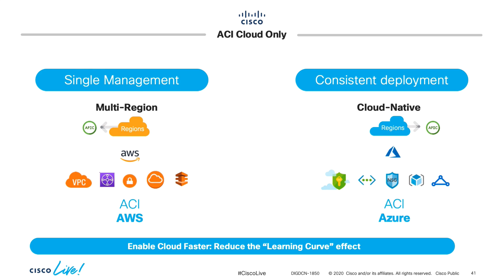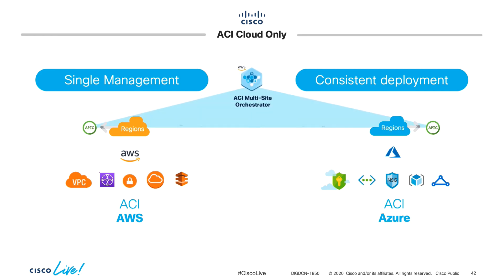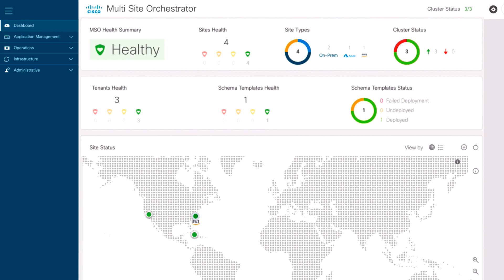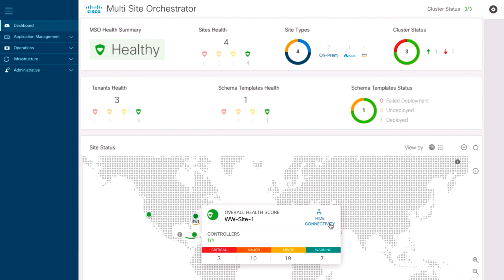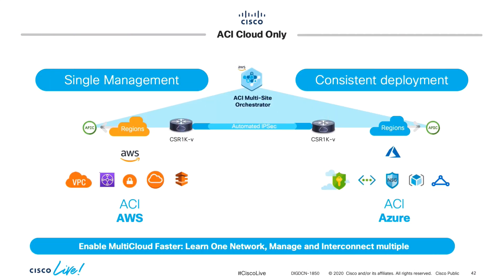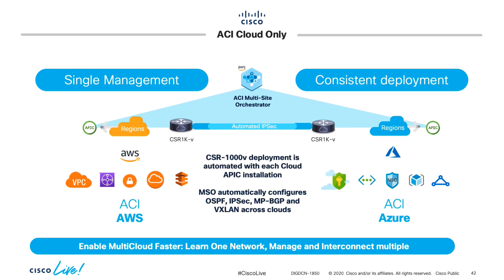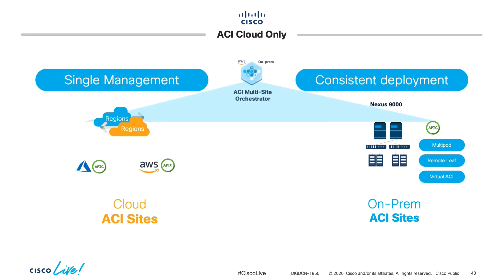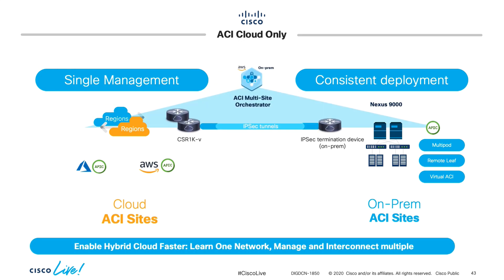If you have multiple cloud vendors running Cloud APIC — in this case Amazon and Azure — you can further aggregate them through a software service called Multi-Site Orchestrator or MSO, which may run in the cloud or on-premises. MSO not only centralizes management for multiple ACI sites including cloud and on-premises ones, but also provides an easy way to automatically interconnect multiple data centers and clouds. By automating the configuration of the embedded CSR 1000v on each Cloud APIC, MSO provides a quick and secure way to interconnect multiple clouds automatically and can also enable hybrid cloud connectivity.